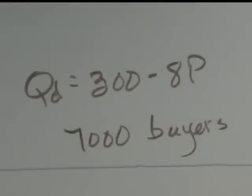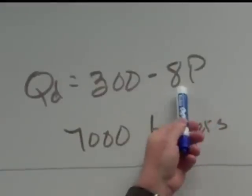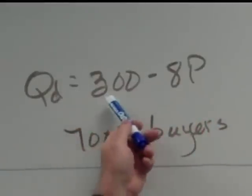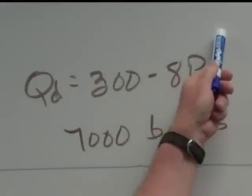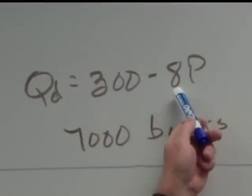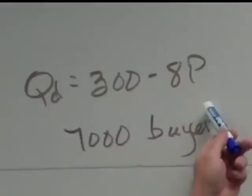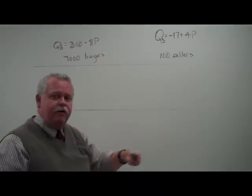What that indicates is that if the price were 0, if we were giving this stuff away, the buyer would take 300 units. And every time we raise the price by $1, he takes 8 fewer units. If you remember your algebra, this is a straight line function. The slope of the line is negative 8. It goes down like a demand curve.